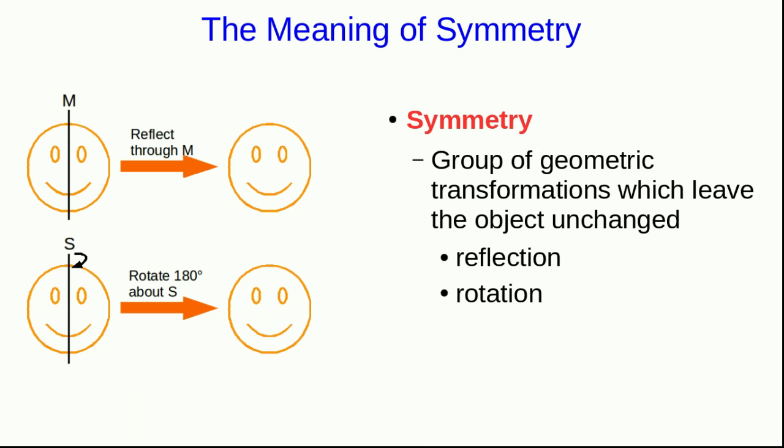Notice that in two dimensions, the reflection through the mirror line M is the same as what you would have if you rotate 180 degrees about an axis vertically down through the happy face, and that both of these are symmetries of this two-dimensional happy face.